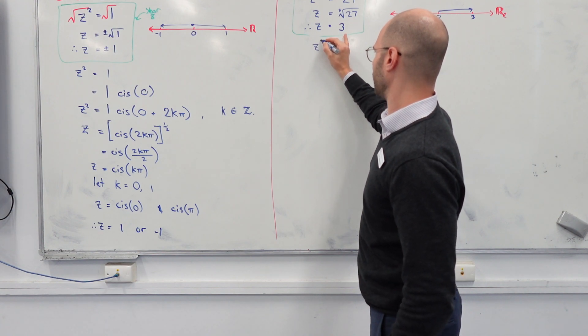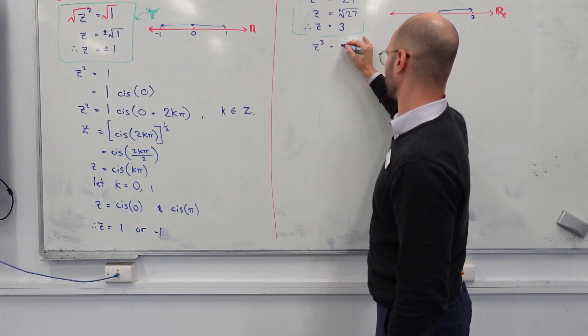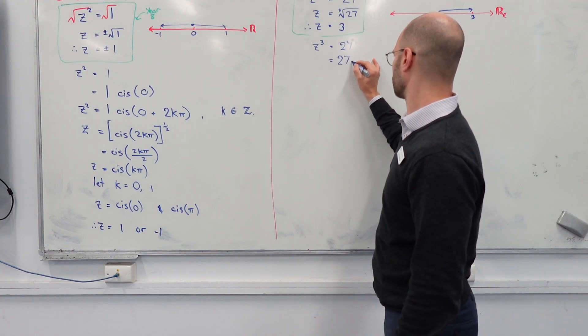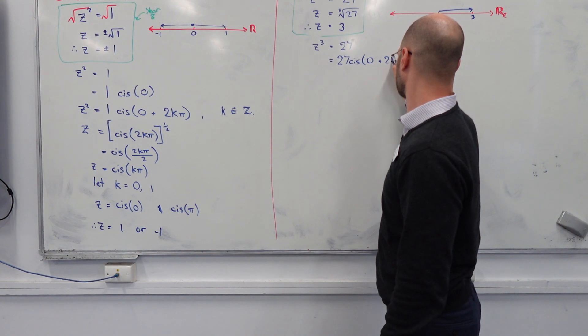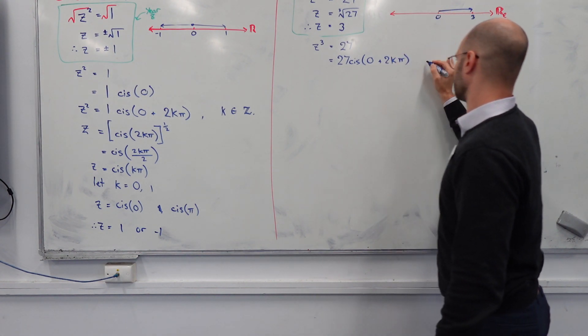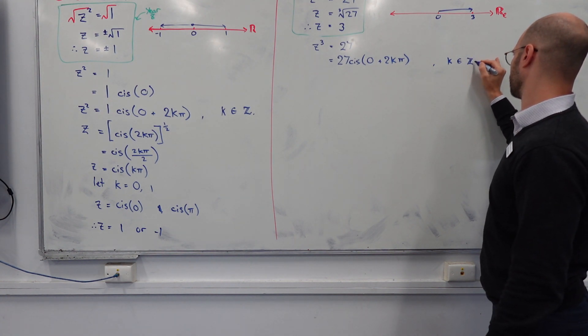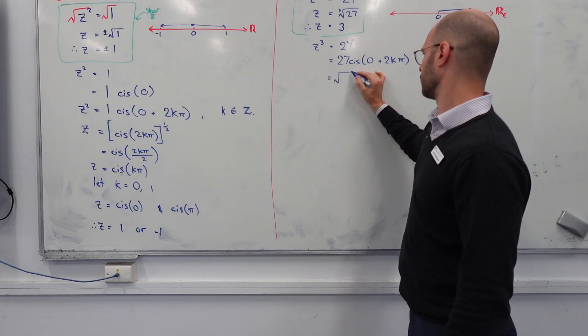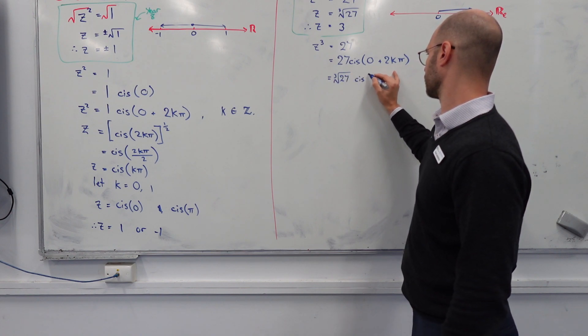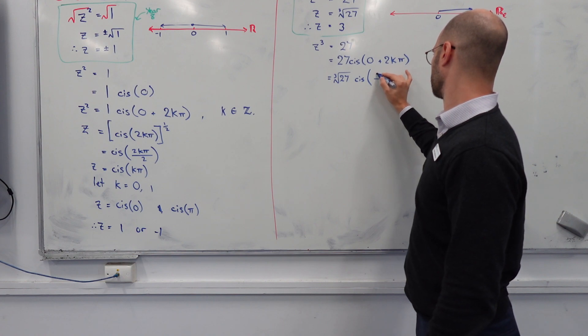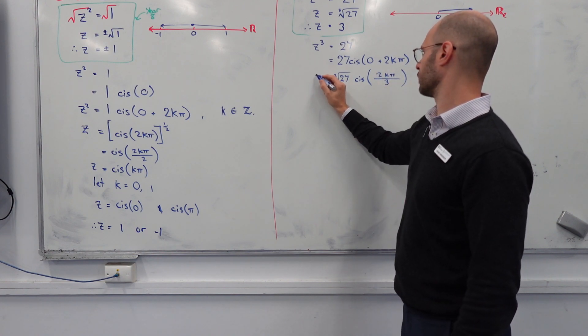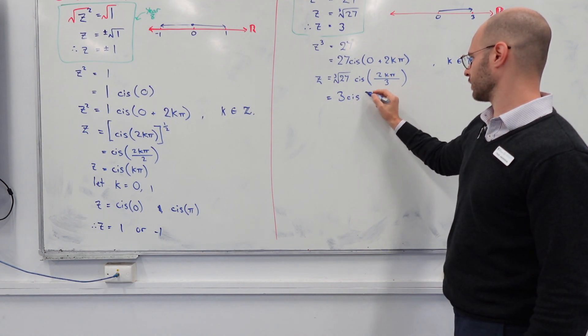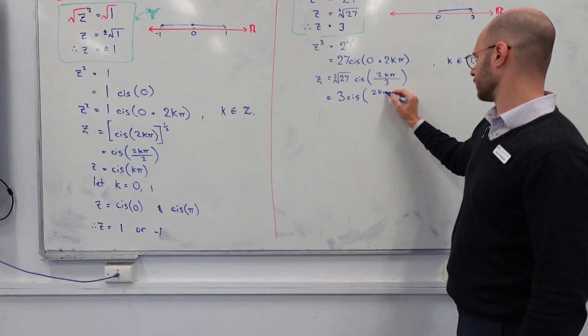Therefore, cis of 0. There was always going to be our first solution. And here comes the second solution. Cis of 0 is 1. Cis of pi is negative 1. So this, guys, is the algebraic method of actually determining all of our roots within an equation that's of higher than order 1. Let's use that same model to find every single root for this cubed equation. Starting off, we define z cubed equals 27. We then change this into what form, Patrick? Polar.